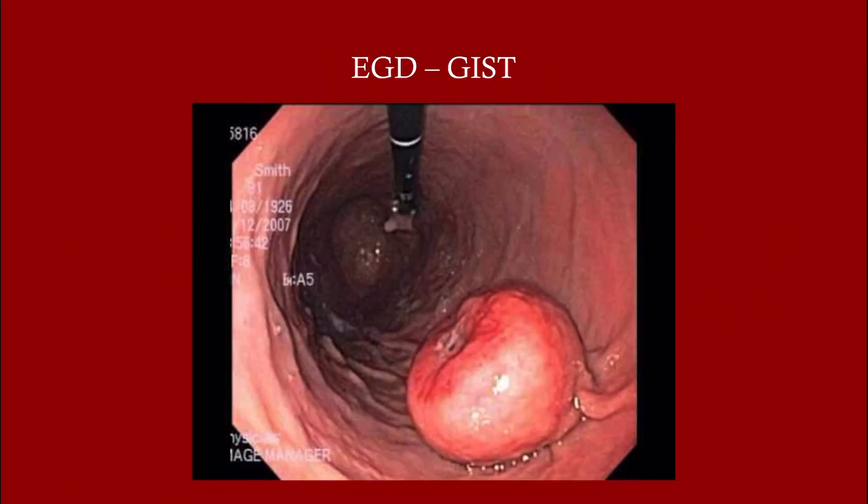This is what a gastrointestinal stromal tumor looks like on endoscopy. You cannot tell the difference between this and other cancers just by looking at it — biopsy is always required.